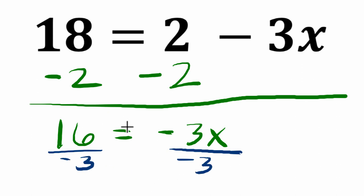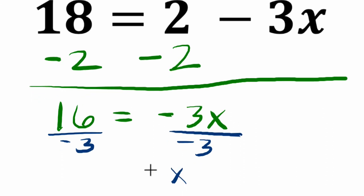we divide both sides by negative 3. So negative 3 divided by itself is positive 1. And 16 divided by negative 3, you could write as negative 16 over 3. We usually put the negative number in the numerator.